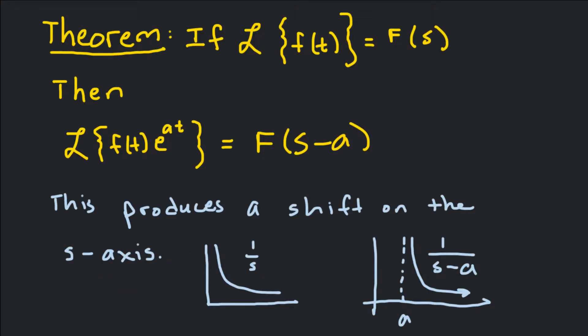That says that if the Laplace of f of t is equal to F of s, for example, the function 1 over s is the Laplace transform of 1. So our function would be Laplace of 1 equals 1 over s. That would be like our f of t and our F of s. Then Laplace of f of t e to the at is equal to F of s minus a.